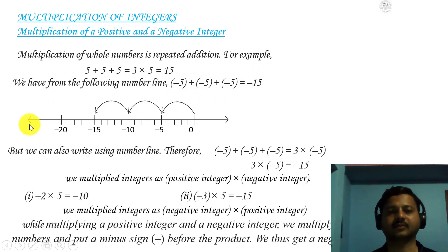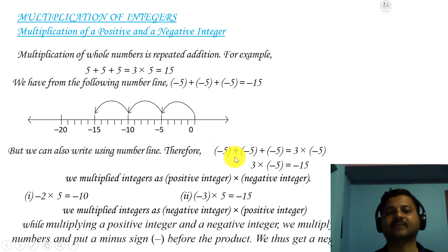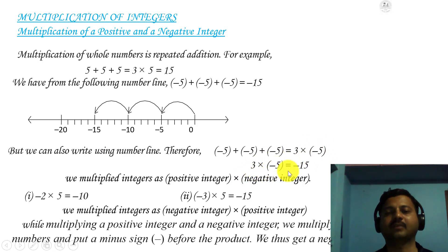On the number line, the left side of zero has negative digits: minus 1, minus 2, minus 3, minus 4, minus 5, minus 6, minus 7, minus 8, minus 9, minus 10, and so on. We can also write this using the number line: minus 5 plus minus 5 plus minus 5 is represented as 3 into minus 5, because minus 5 repeats 3 times. So 3 into minus 5 equals minus 15, since 5 threes are 15 and 3 is positive — plus into minus is minus.